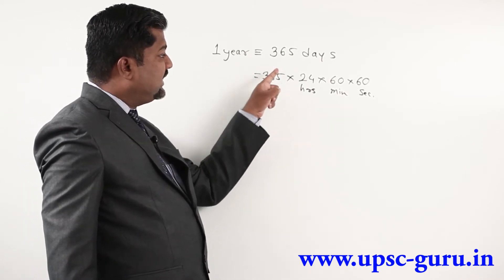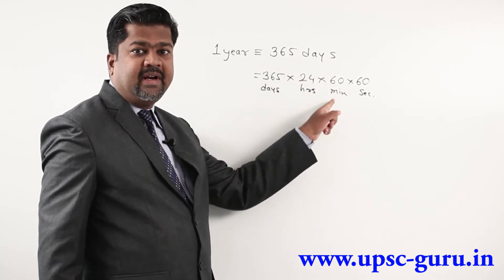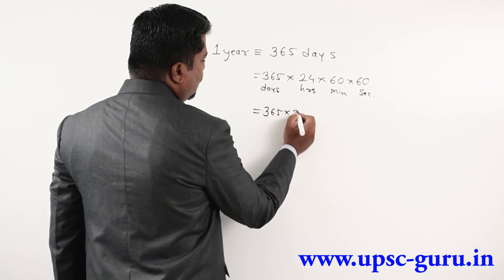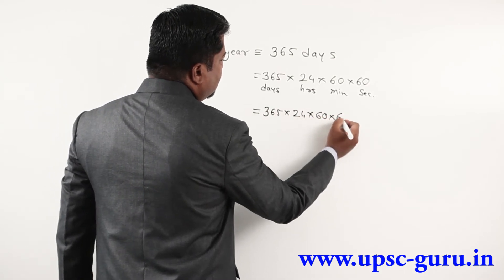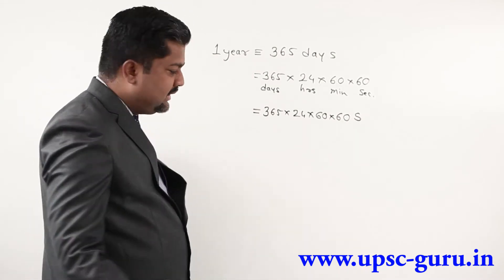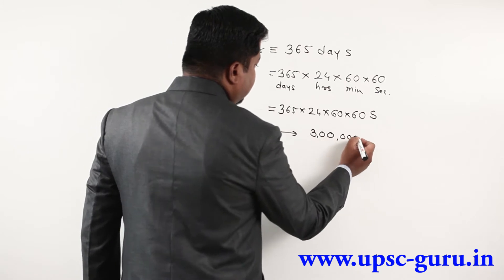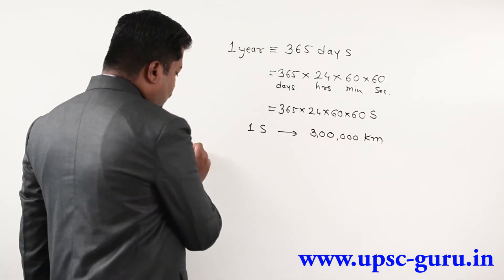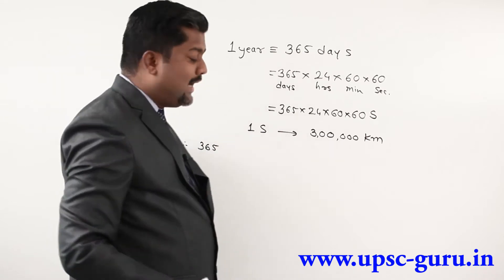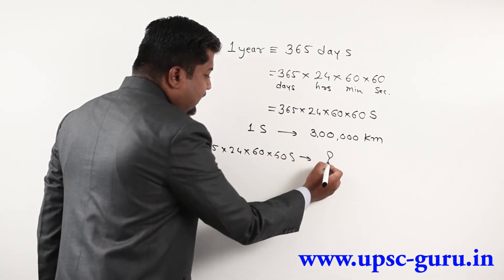One year equals 365 days, one day equals 24 hours, one hour equals 60 minutes, and one minute equals 60 seconds. Therefore, the number of seconds in one year is 365 × 24 × 60 × 60. In one second, light can travel 300,000 kilometers. So in that many seconds, you have to calculate the total distance.